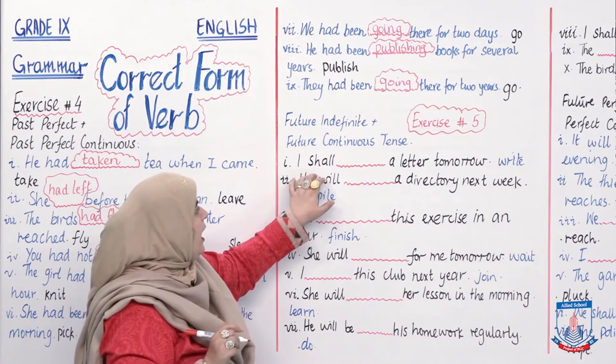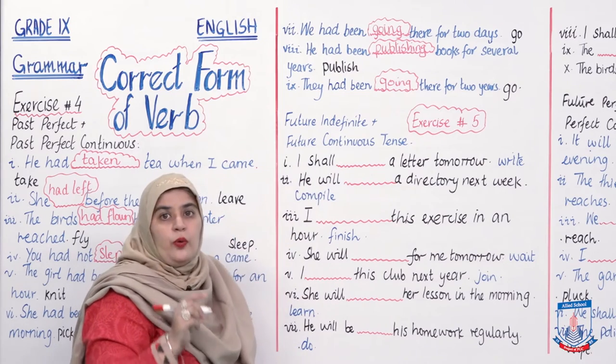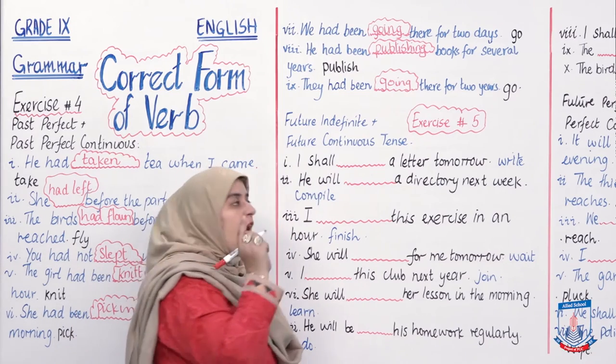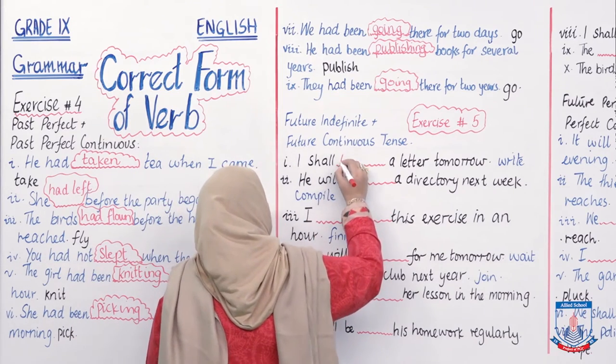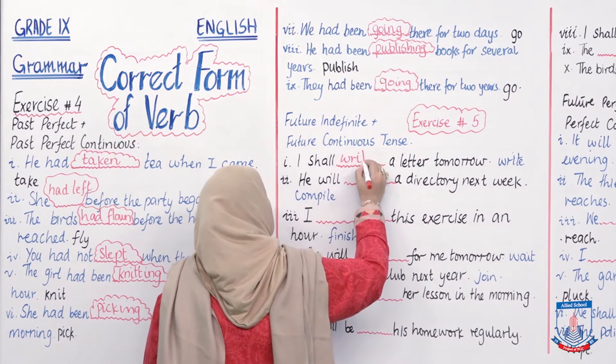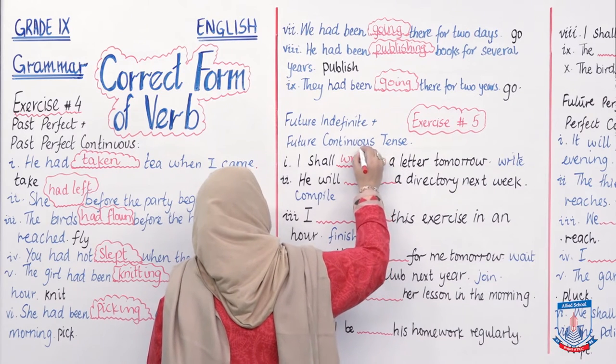Sabse pehla sentence: 'I shall ___ a letter tomorrow.' Answer: 'I shall write a letter tomorrow.' It will not be 'I shall be writing' — this is a simple future action. Kal main yeh kaam karunga.